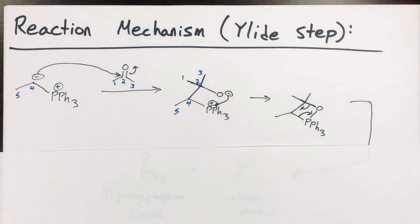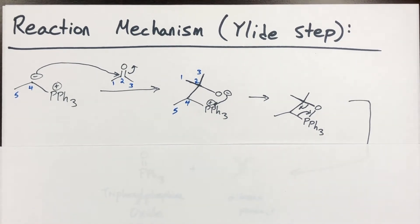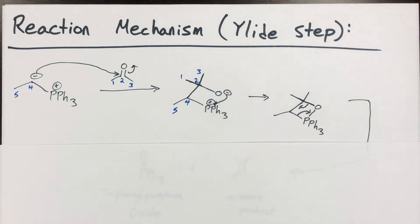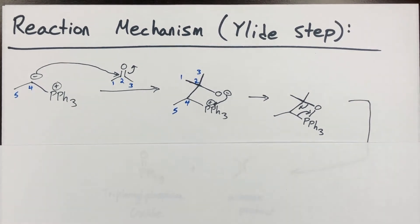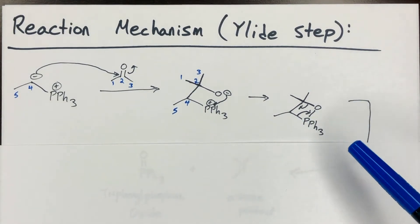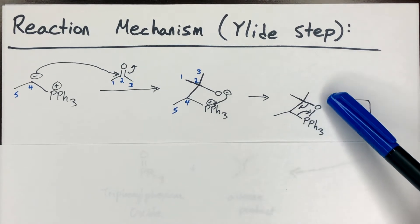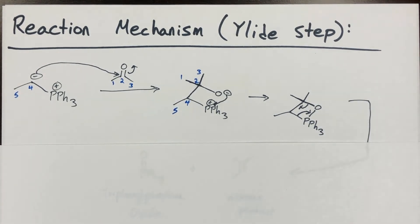At this point, there's a Coulombic attraction between the negatively charged oxygen and the positively charged phosphorus of the phosphonium moiety. One of the lone pairs on the oxygen attacks the phosphorus to create an oxygen-phosphorus bond, forming a four-membered ring. These four-membered rings are extremely strained and want to cleave — you form the phosphorus-oxygen bond and the carbon-carbon double bond at the same time in a concerted mechanism. It doesn't matter which bond you start with, as long as you're showing both the phosphorus-oxygen bond and the carbon-carbon double bond forming.